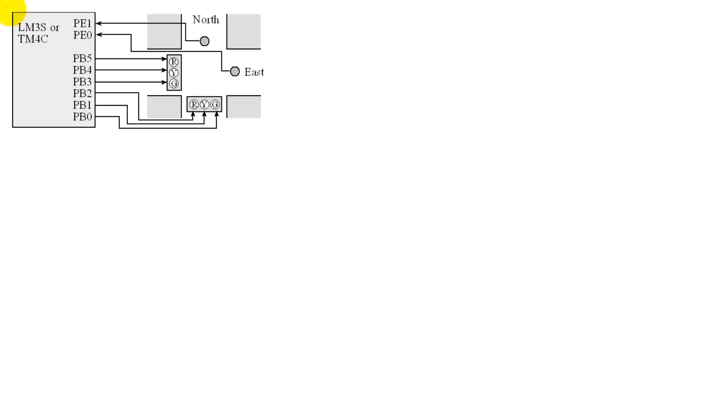In this video, we're going to go through the motions of how a finite state machine works, starting from scratch. We're looking at an example of a traffic lights system, and we're going to connect a traffic light to our LaunchPad.